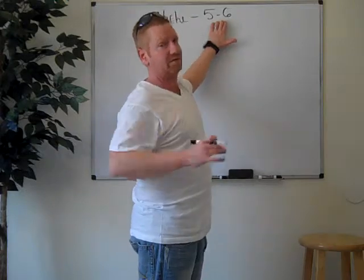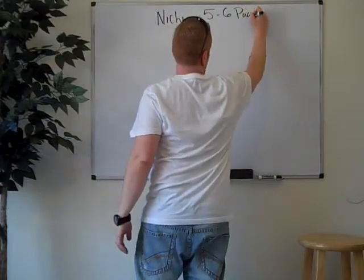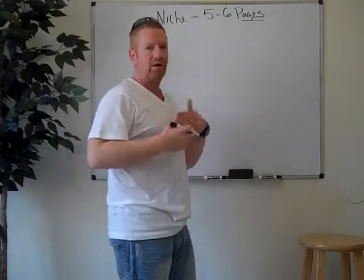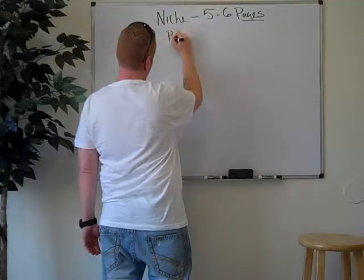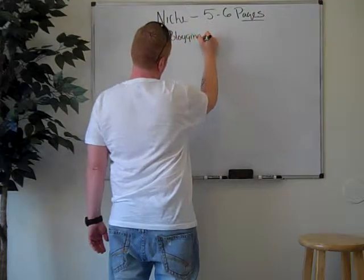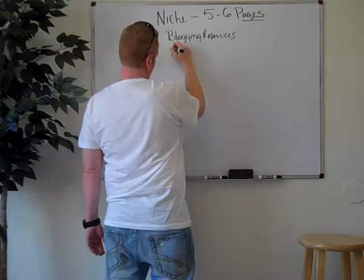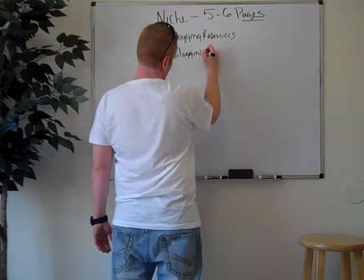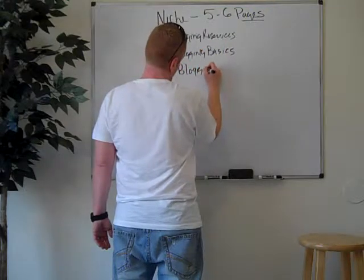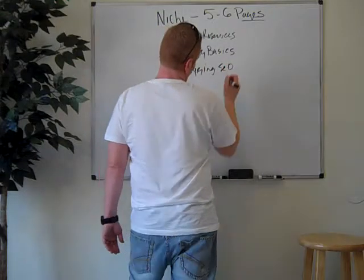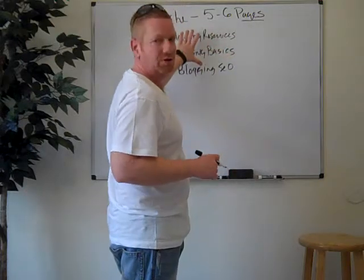Because these are going to be the main pages, the static pages to your WordPress blog or Joomla or Drupal. So these are going to be five or six pages. And these are all going to be keyworded somewhere around what that niche is about. So let's just say you're talking about blogging. Maybe you want to talk about blogging resources, then you want to go blogging basics, maybe you want to go to blogging SEO.